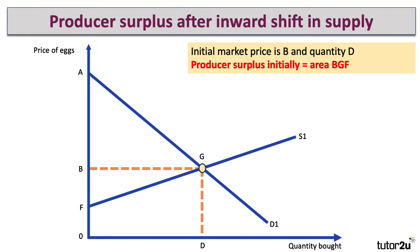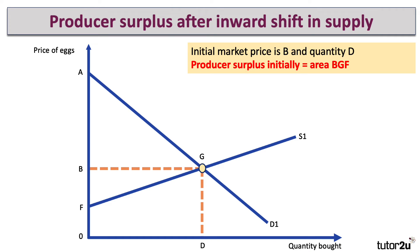Now, initially the market price is B and the quantity is D, and therefore the producer surplus to start off with is the area BGF — the area above the supply curve and below the price.